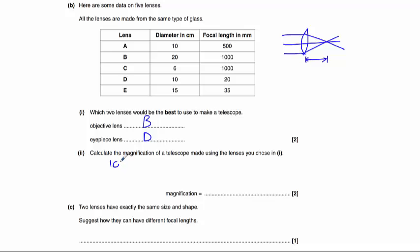And the focal length of our eyepiece lens is 20. 1000 divided by 20 is 50 times. So we have a magnification of 50 times.